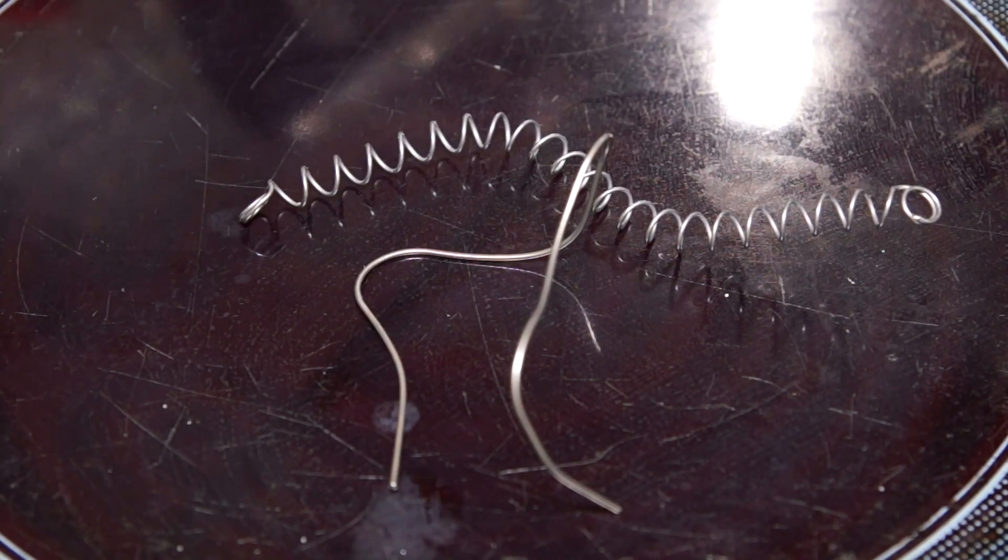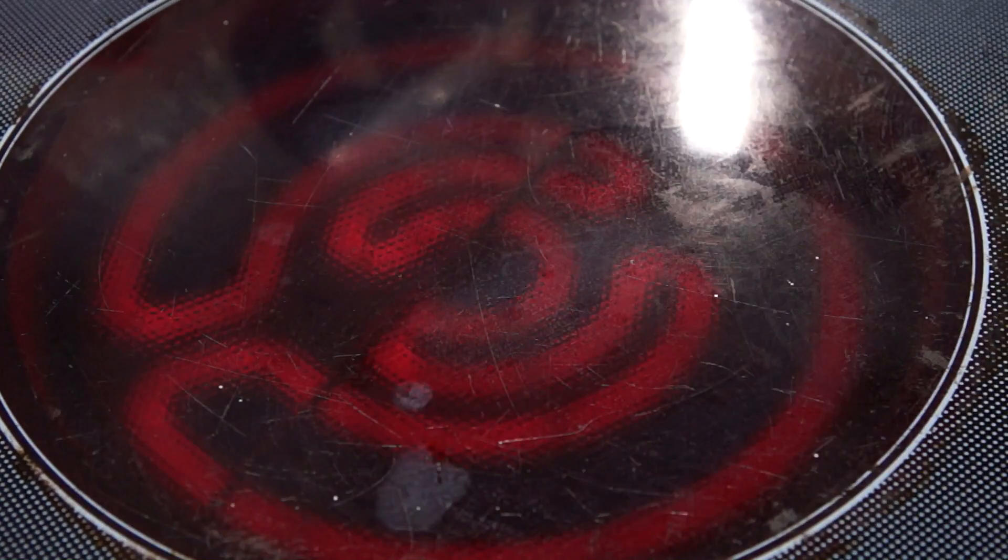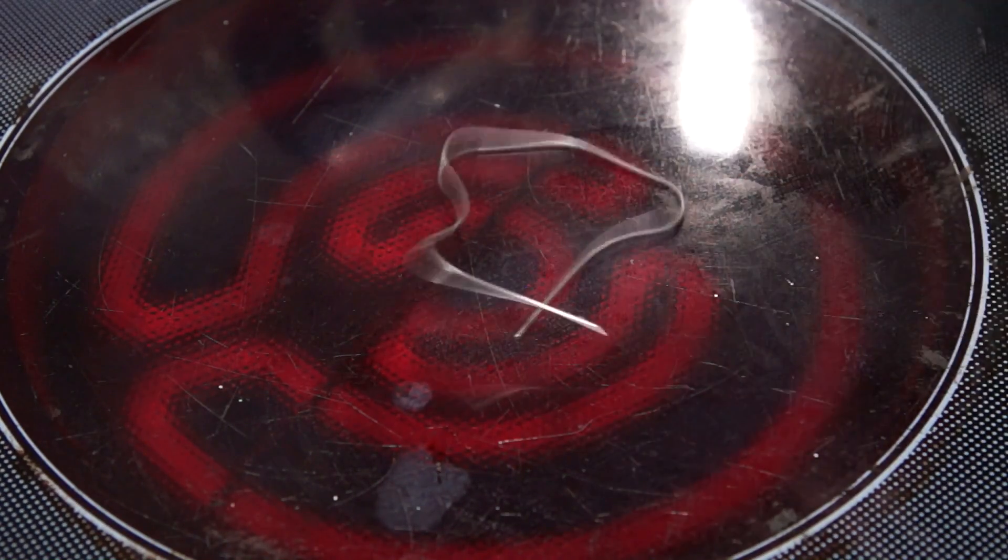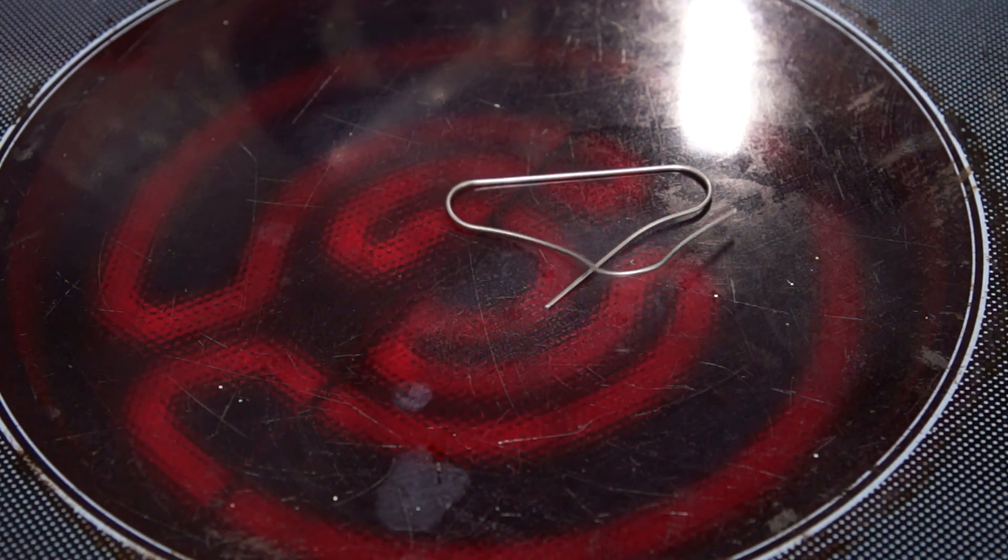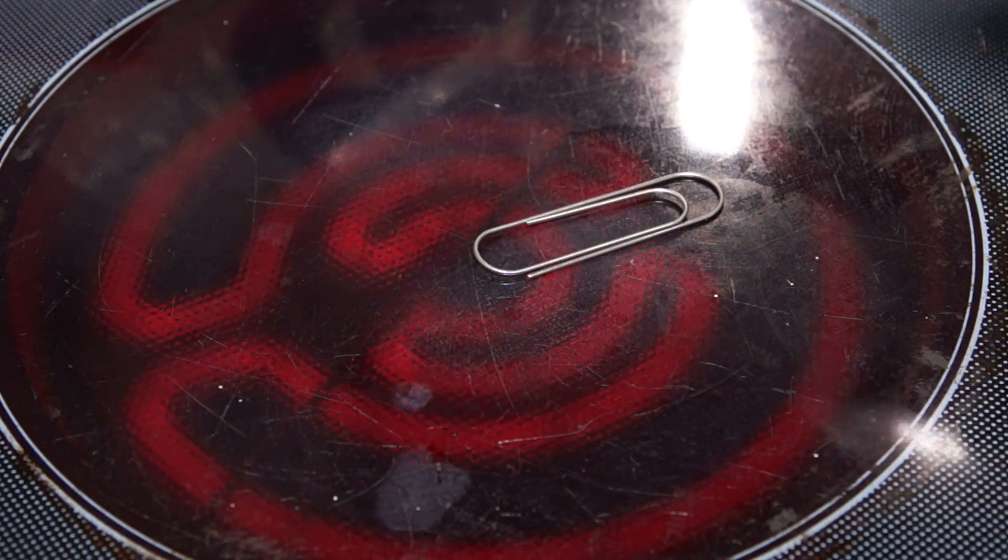The activation temperature of nitinol is about 40 degrees Celsius. I have turned on the burner on the stove and put the deformed nitinol clip on its surface. Over time while heated, the clip begins to return to its original shape.